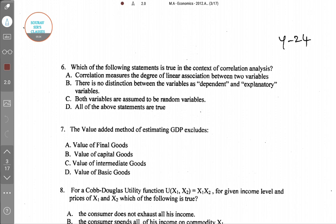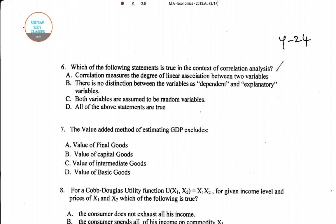In question number six, it is asked which of the following statements is true in the context of correlation analysis. The first option is that correlation measures the degree of linear association between two variables, meaning it measures the linear association between x and y — not that x determines y, but a mutual linear relationship.